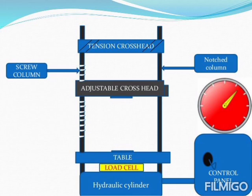We can see a picture of a universal testing machine showing the screw column, the tension crosshead, the adjustable crosshead, the table, the load cell where the load is applied, and the hydraulic cylinder. On the right side, you can see the notch column and the reading indicating the value of load applied, which is controlled by the control panel.